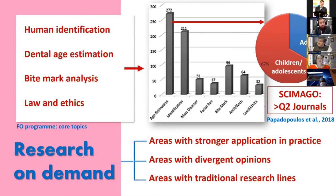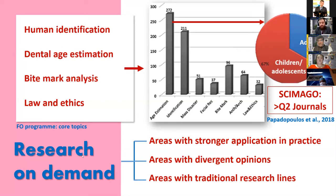Forensic odontologists also research areas with divergent opinions — bite mark analysis is the best example. We don't have a uniform opinion about this evidence, so research in that field is extremely important. We need to understand how to address bite marks and whether this evidence will be accepted in court. Of course, specific universities follow traditional research lines, with a history of publications in specific topics generating new studies from that group of researchers.